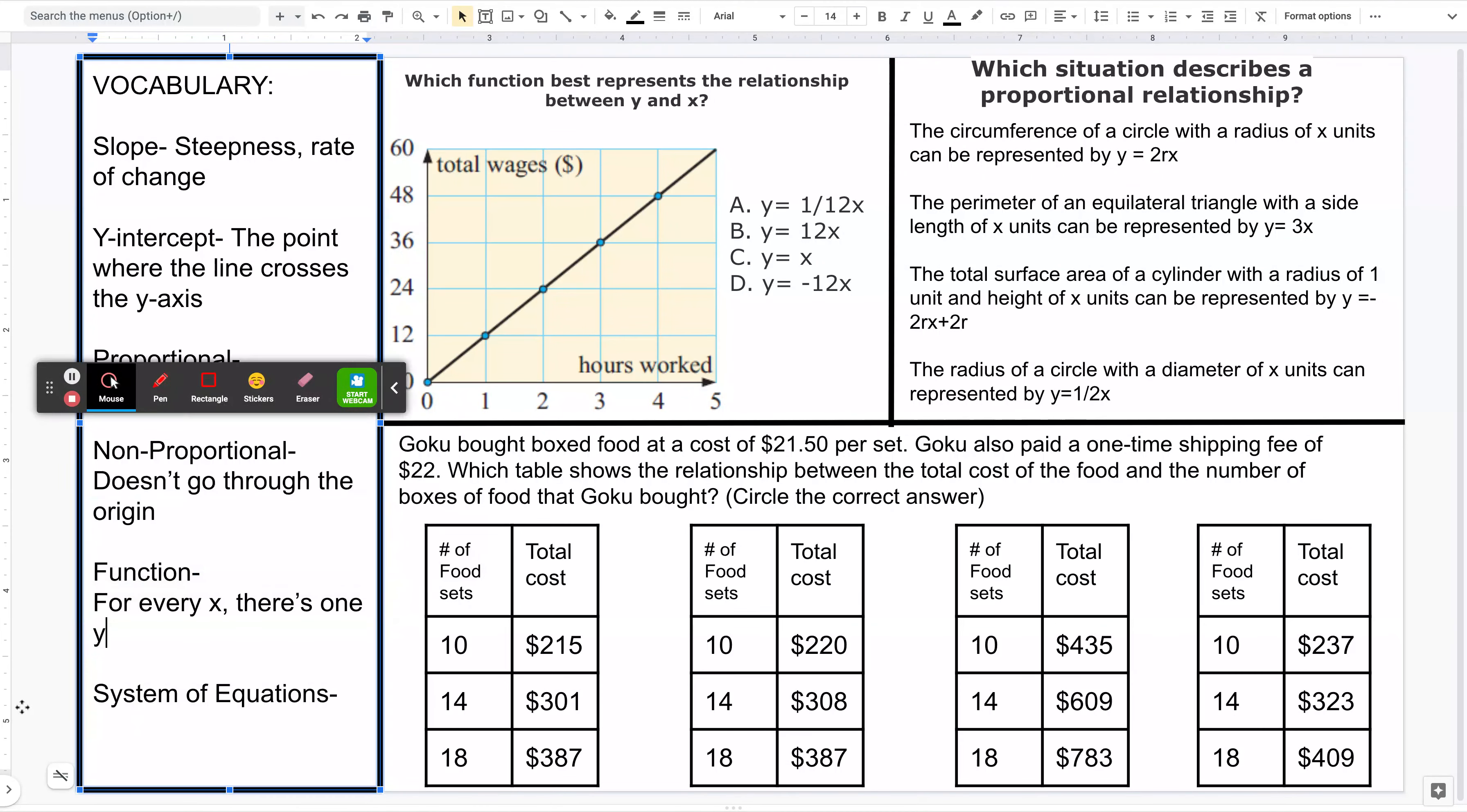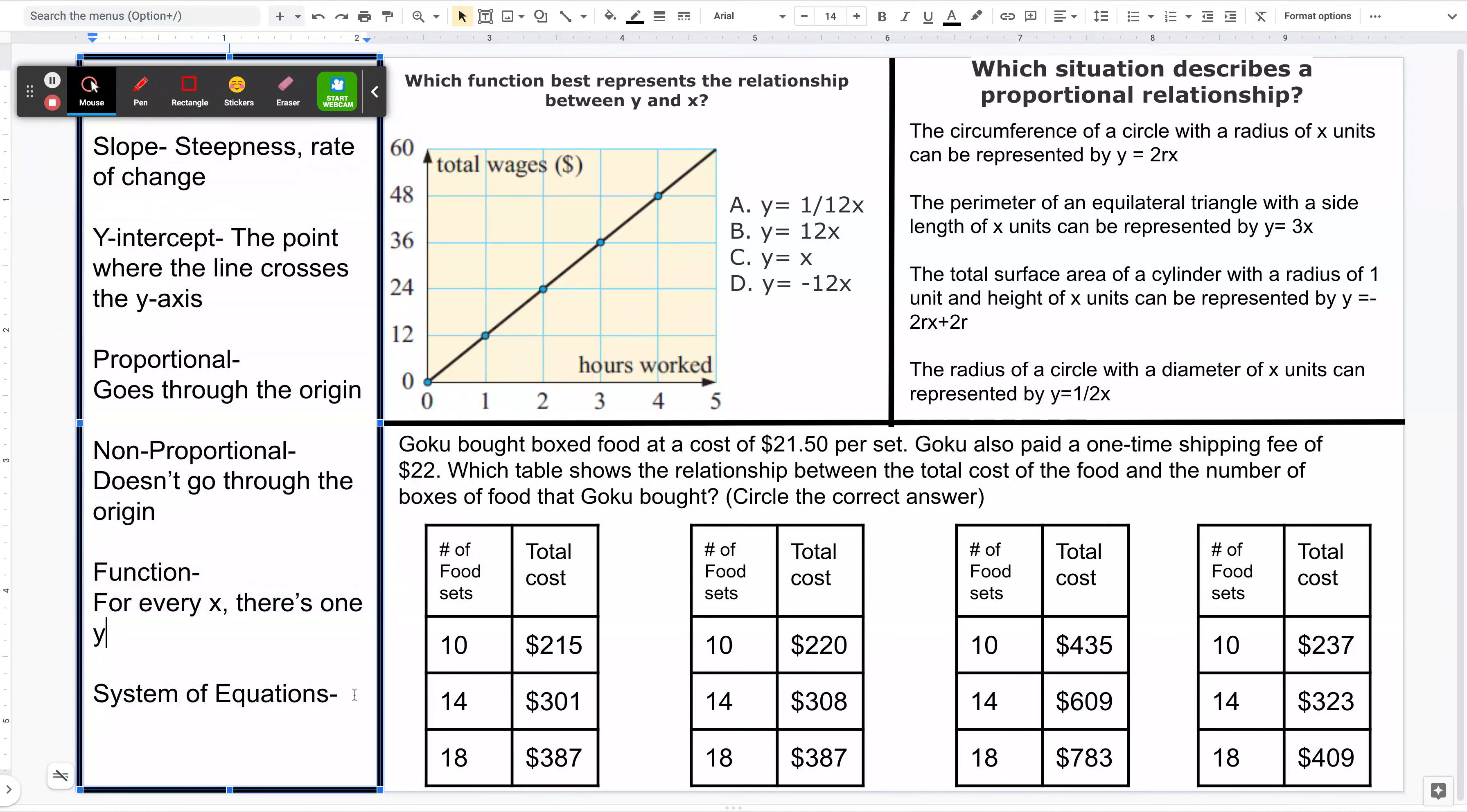And then our last word: systems of equations. For that, it's where the two lines cross, or intersect—I should use the math word.